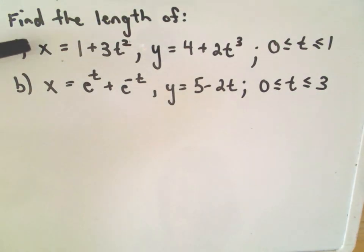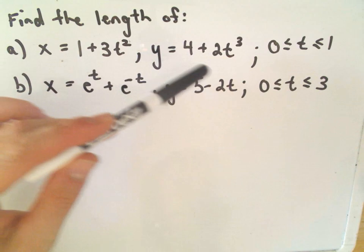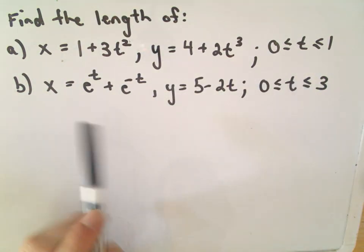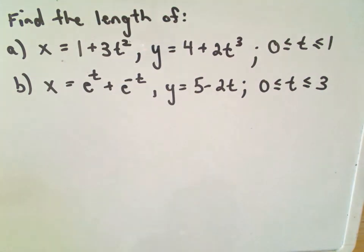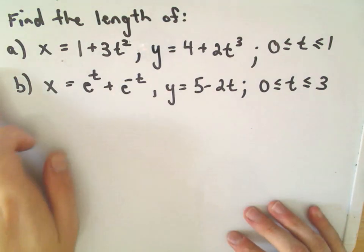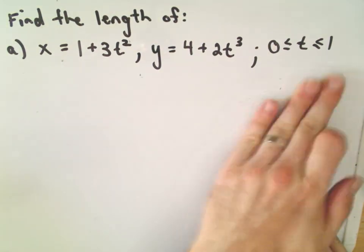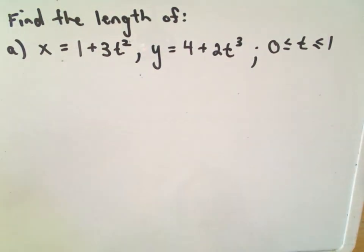In this video, I'm going to find the length of the curve given by x equals 1 plus 3t squared, y equals 4 plus 2t cubed over the interval 0 to 1. In another video, I'll do where x is e to the t plus e to the negative t, and y is 5 minus 2t over the interval 0 to 3. But let's do this one first.